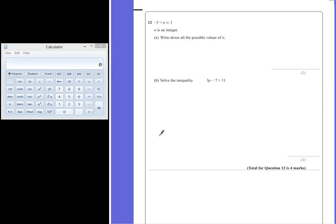Question 12. Negative 3 is less than n which is less than or equal to 1, where n is an integer. Part A, write down all the possible values of n.